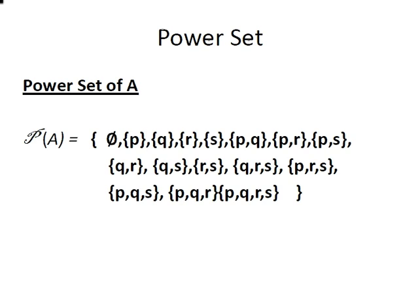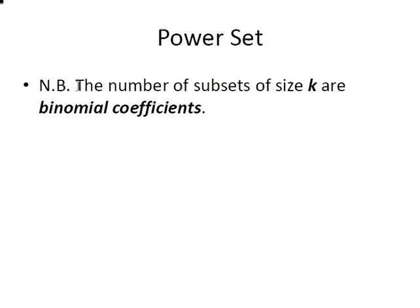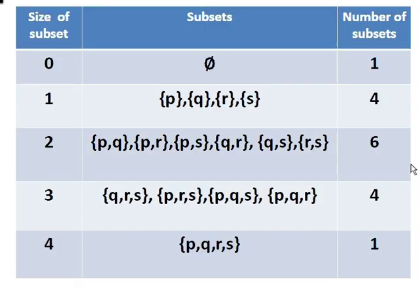And finally, just as a remark, the number of subsets of each size k are binomial coefficients. So if you are familiar with binomial coefficients, that's how you would automatically know that this is one, four, six, four and one. If you don't know what they are, not to worry. I won't get into them now.